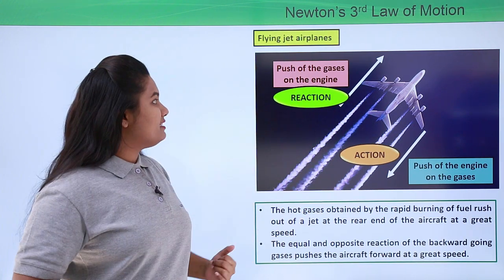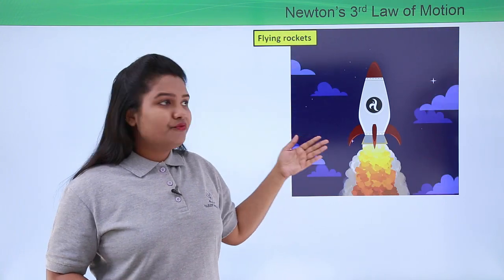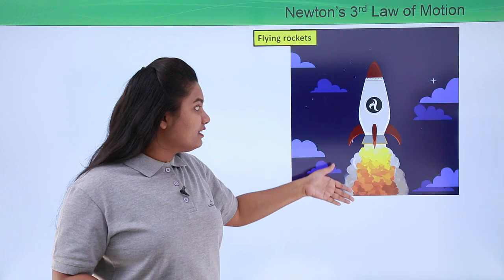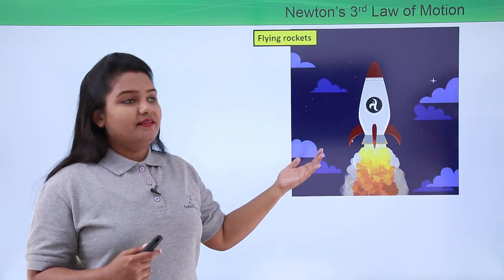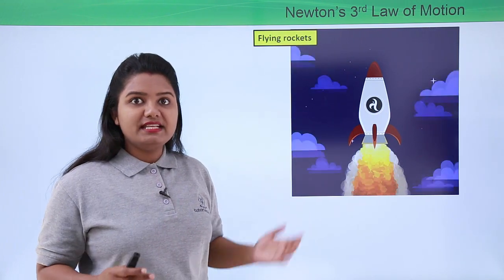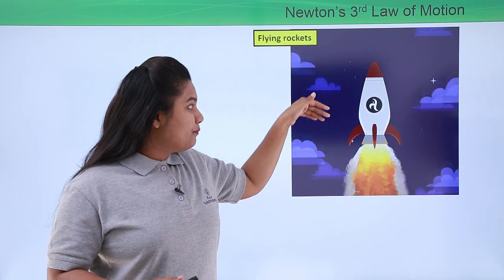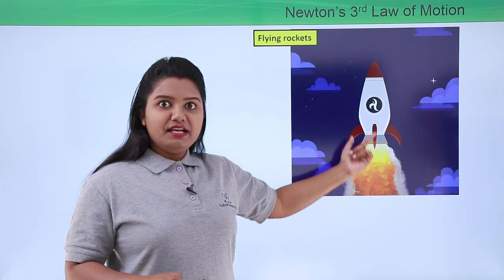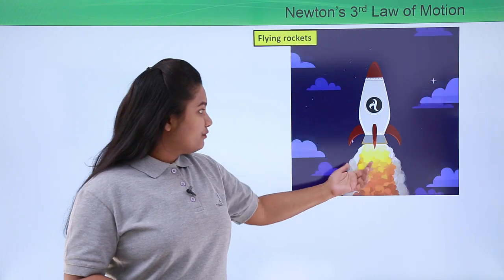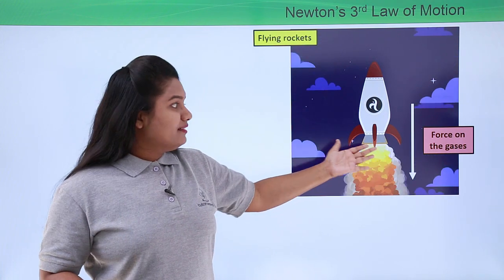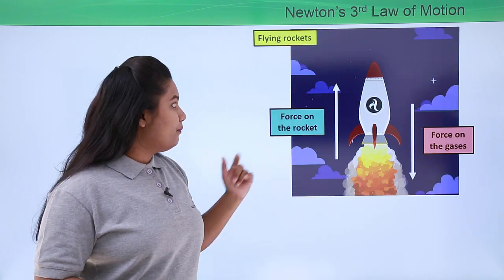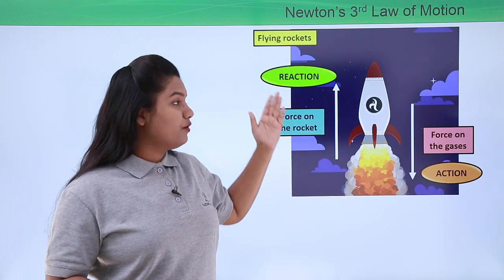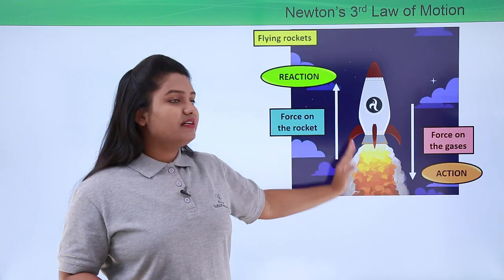Our next application is similar: flying rockets. Unlike airplanes, rockets move in the upward direction. The mechanism is the same — gases are produced by the rapid burning of fuel inside the rocket. These gases are pushed downwards, and that is the reason the rocket gets an upward lift. The force acting on the gases is in the downward direction, and as a reaction the resulting force acts on the rocket in the opposite, upward direction.